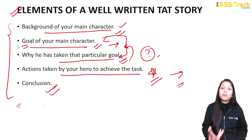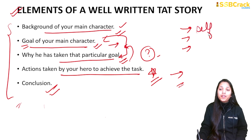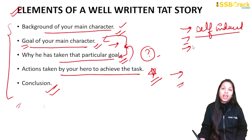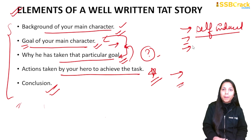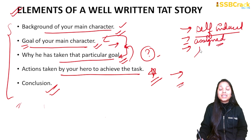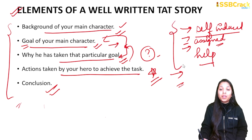If you talk about the goal, there are different types. There can be only three cases: first, a self-induced goal — where your own mind drives you to do something. Second, an assigned goal — where somebody of higher authority, like your parents, teachers, or senior, assigns that work to you. Third, a helping goal — where somebody comes to you for help and asks you to do something for them. These are the three ways your goal can be defined.